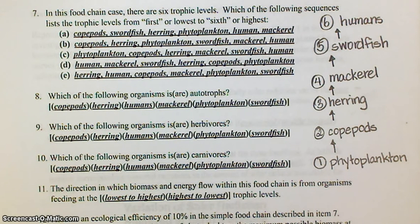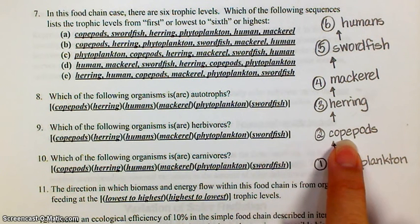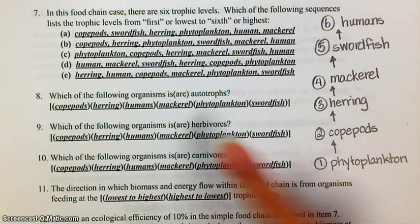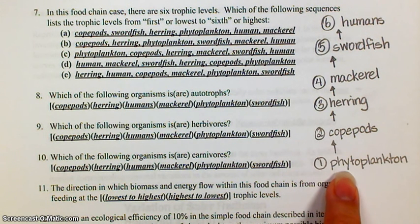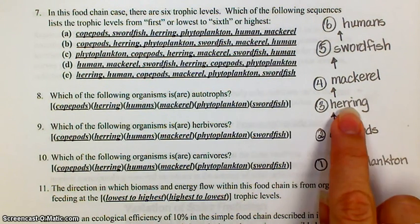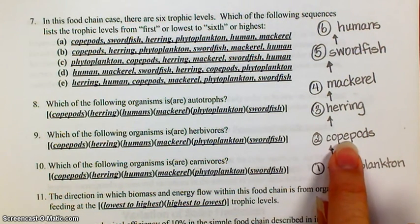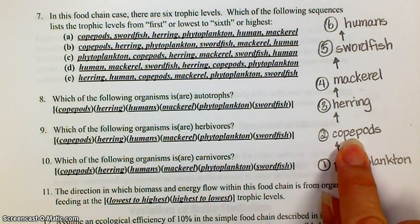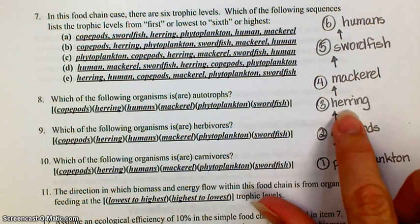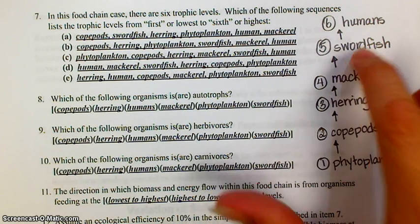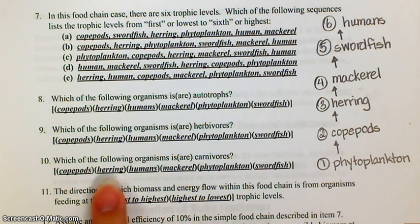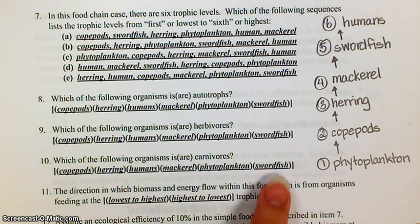Which of the following organisms are carnivores? We've already said that copepods are your herbivores and phytoplankton is your autotroph or producer. Herring eats copepods. Mackerel eats herring. Swordfish eats mackerel. Humans eat swordfish. So, the herring, the humans, the mackerel, and the swordfish are all carnivores.